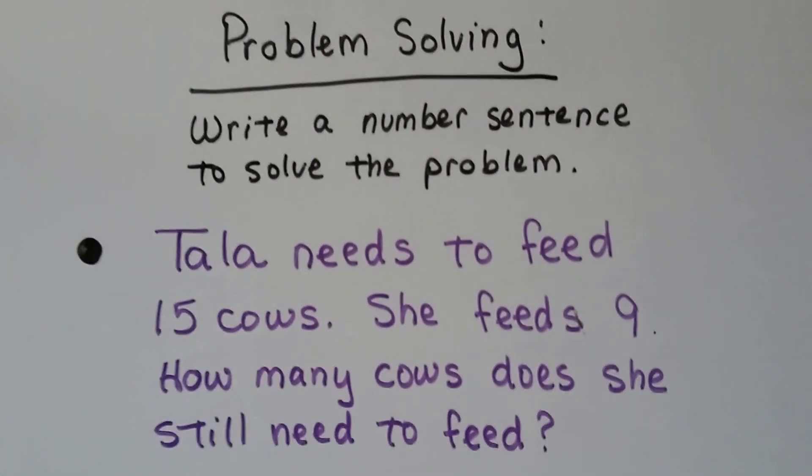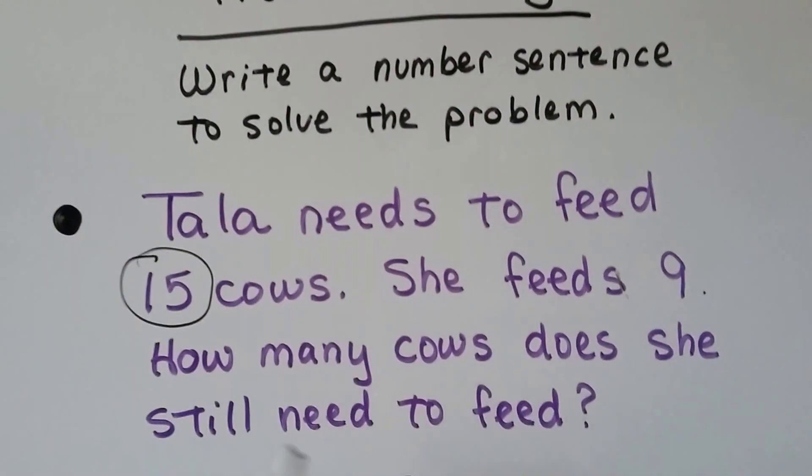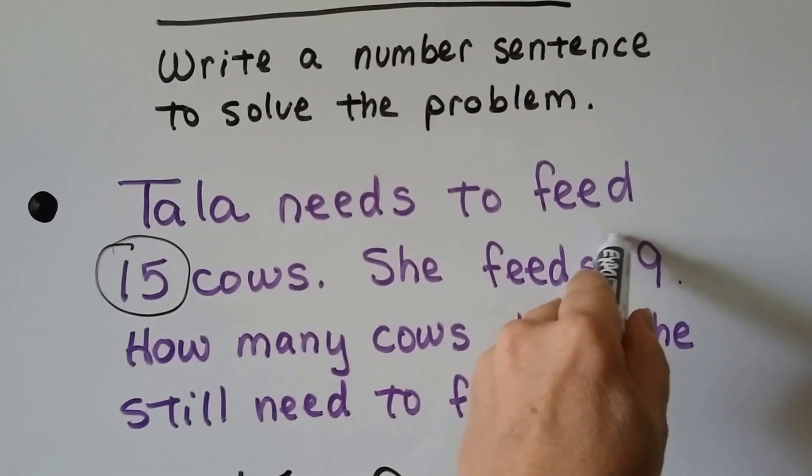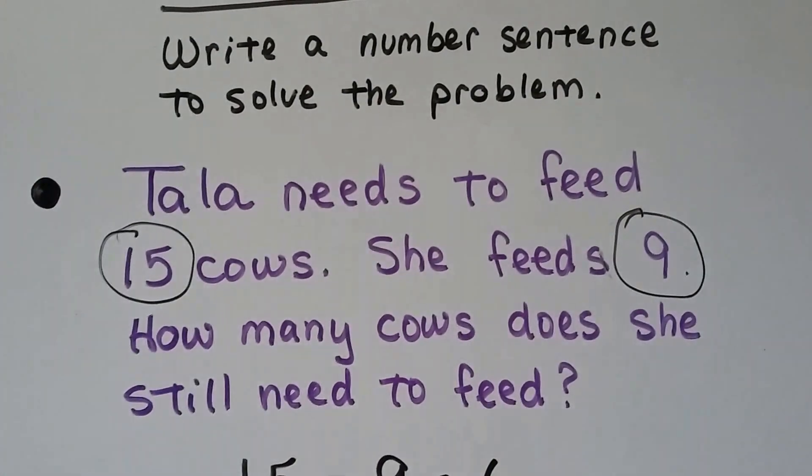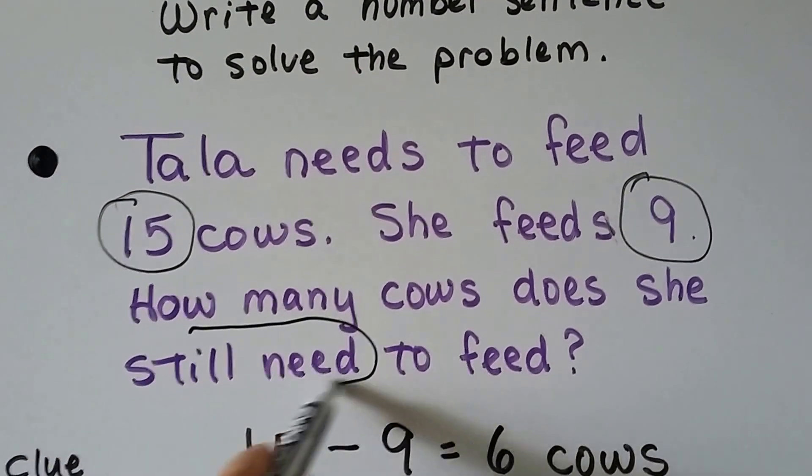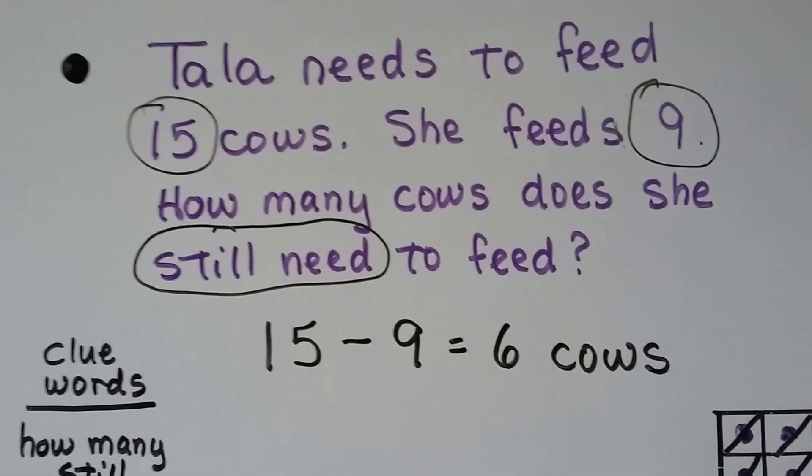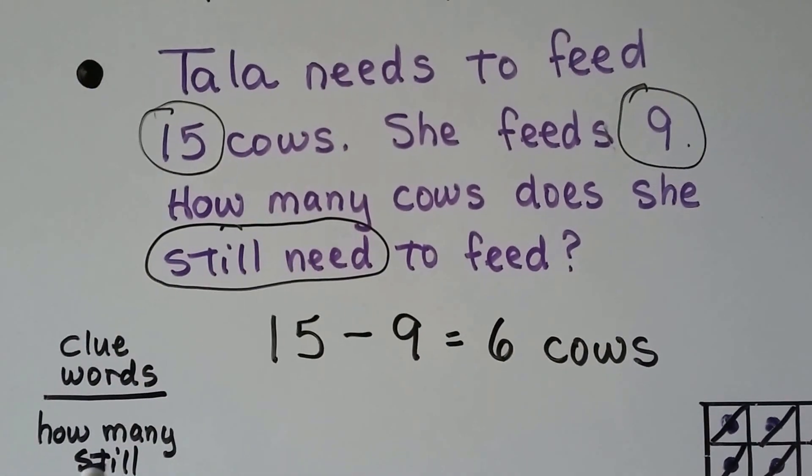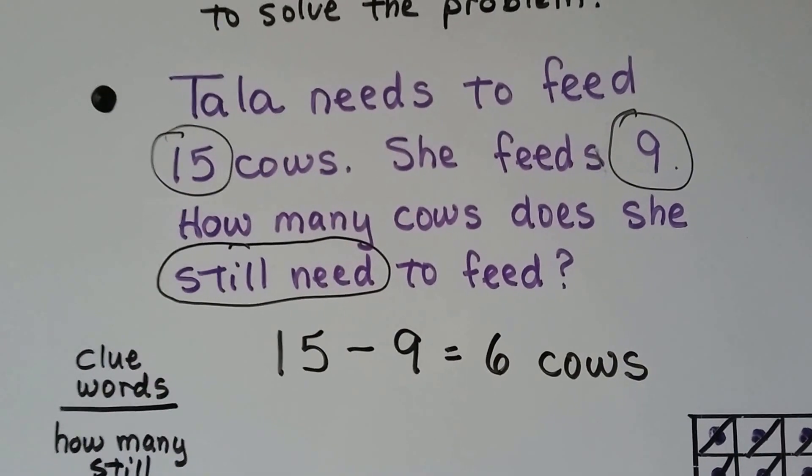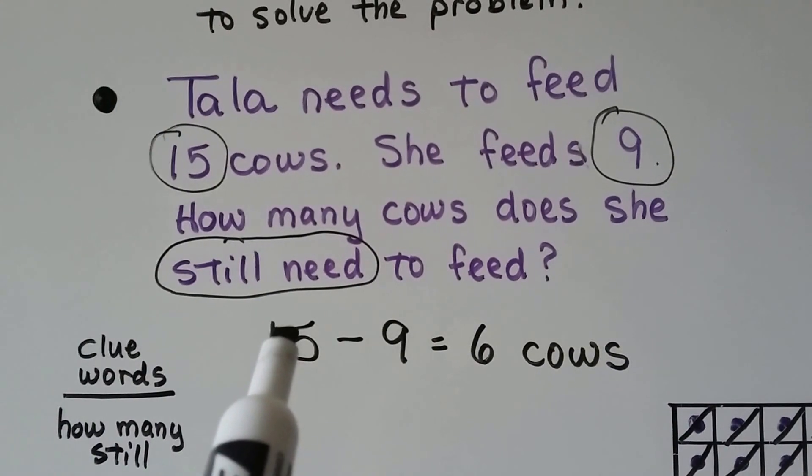Let's look for the clue words and important numbers. We know that 15 cows is how many there were. We know she fed 9 of them. It says still need to feed. Clue words are how many and still. That means we're going to take 9 away from the 15.